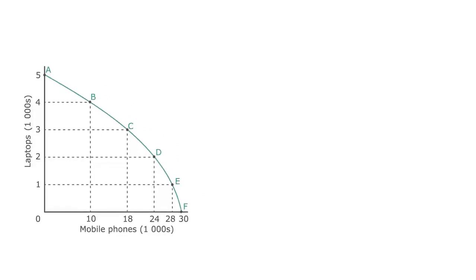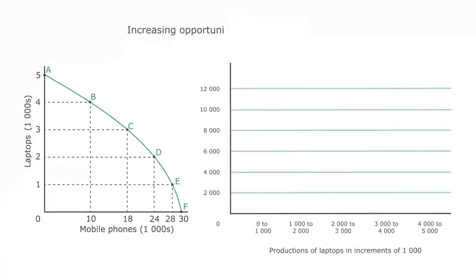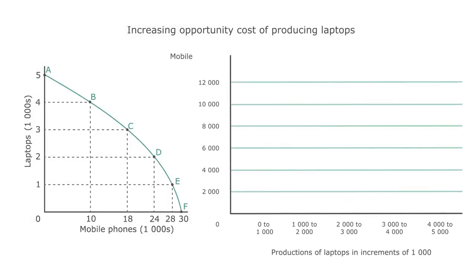If you take a closer look at the opportunity cost of producing laptops, what you will notice is that the opportunity cost increases as more laptops are produced. The opportunity cost of increasing the production of laptops from 0 to 1,000 is 2,000 mobile phones. As the production of laptops continues to increase, more and more resources are allocated away from the production of mobile phones.